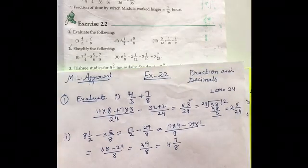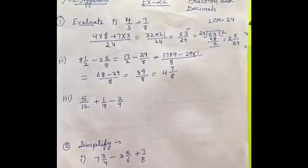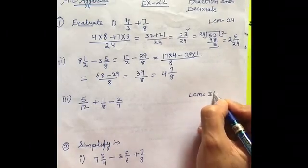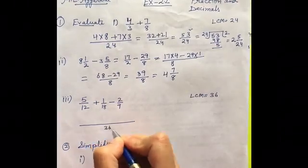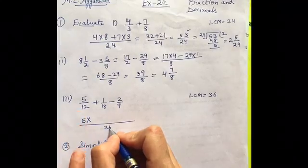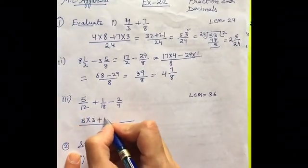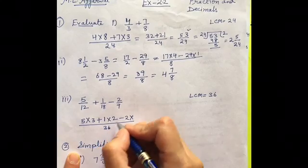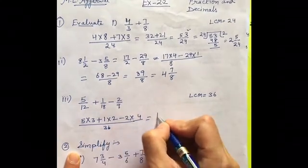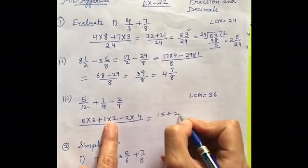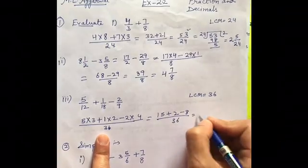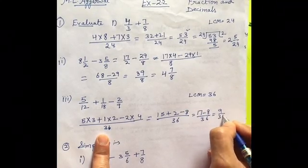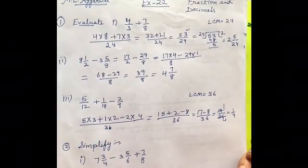And now, the third part of this. Let us see how we are going to do the third part also. The steps are same. First, take the LCM. LCM here in this case is 36. So, make a line 36. Write down the first multiplied by 36 divided by 12. It is 3 plus 1 multiplied by 36 divided by 18 is 2 minus 2 multiplied by 36 divided by 9 is 4. So, 15 plus 2 minus 8 upon 36 which is 17 minus 8 upon 36 and it is 9 upon 36. Reduce it. So, it is 1 by 4.